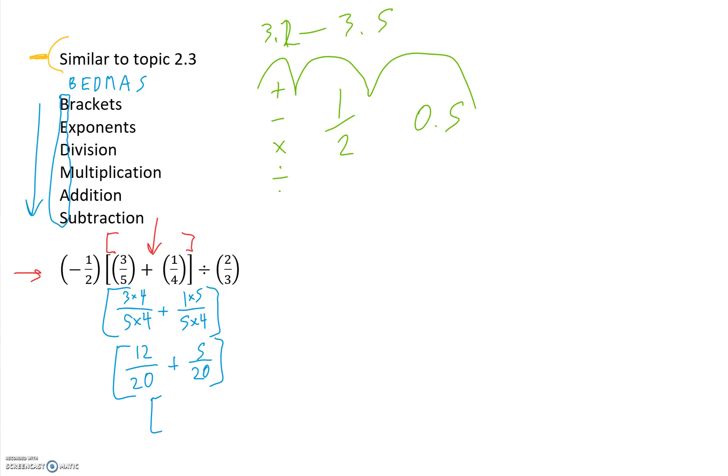Adding those together, we have 12 plus 5 is 17 over 20. Now I'm going to add back the previous parts that we haven't done yet. We just did everything inside the brackets. Let's write down the rest of the equation, or the question.